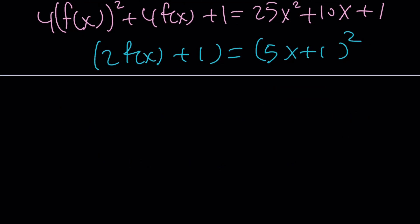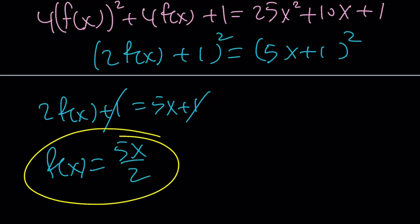And from here, by square rooting both sides, we get two solutions. 2f(x)+1 = 5x+1. And the 1 cancels out. And f(x) becomes 5x/2, which is the same thing as (5/2)x. That's one of the solutions.